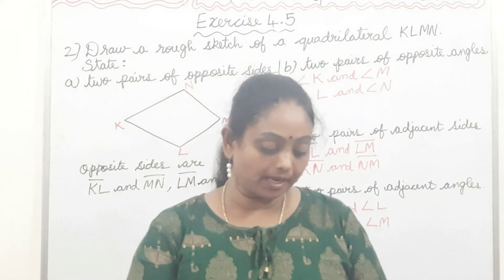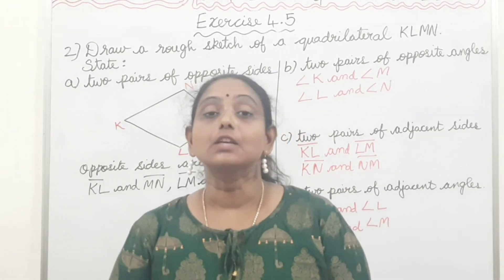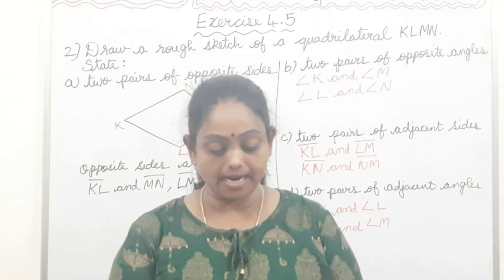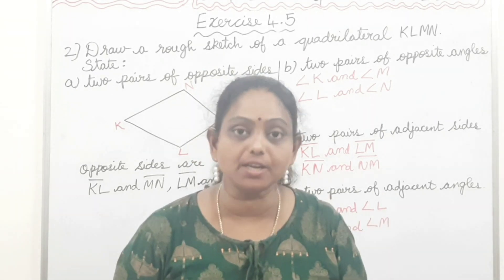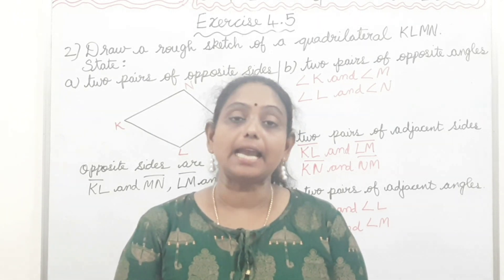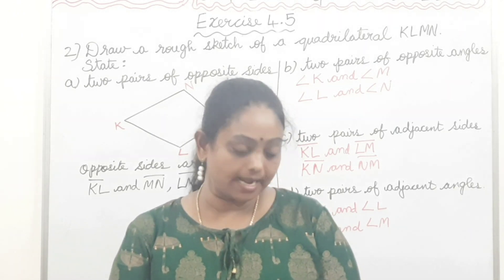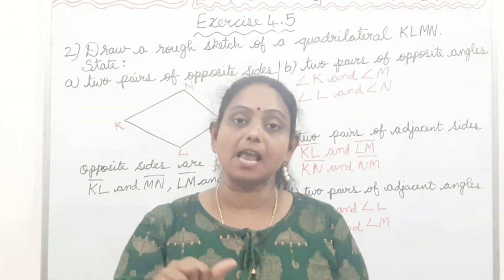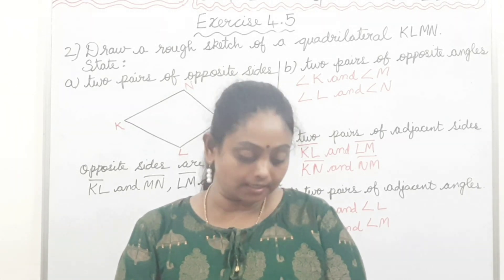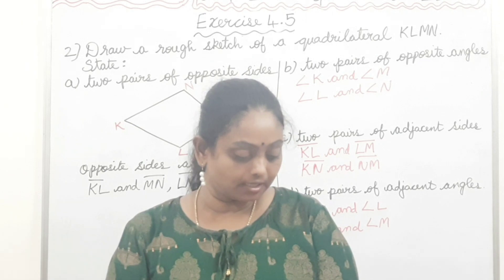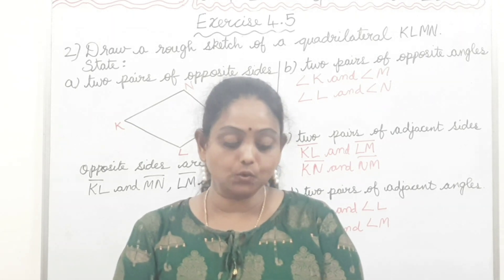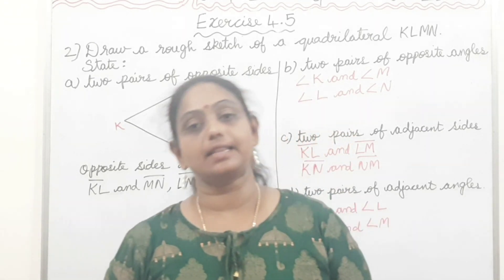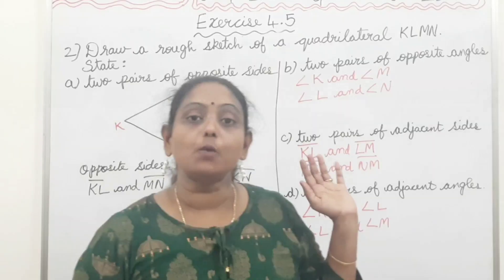Question number 3 is an investigation activity. Use strips and fasteners to make a triangle and a quadrilateral. Try to push inward at any one vertex of the triangle, then do the same to the quadrilateral. Check: Is the triangle distorted? Is the quadrilateral distorted? Is the triangle rigid? This explains why structures like electric towers use triangular shapes and not quadrilateral shapes. Yeh activity aap ghar pe karke dekh sakte hain.